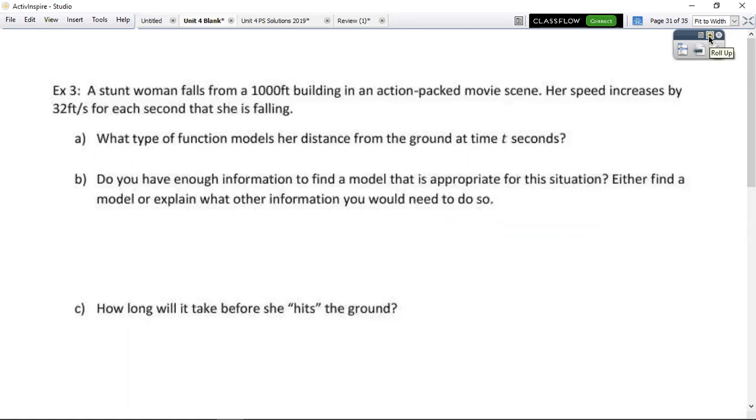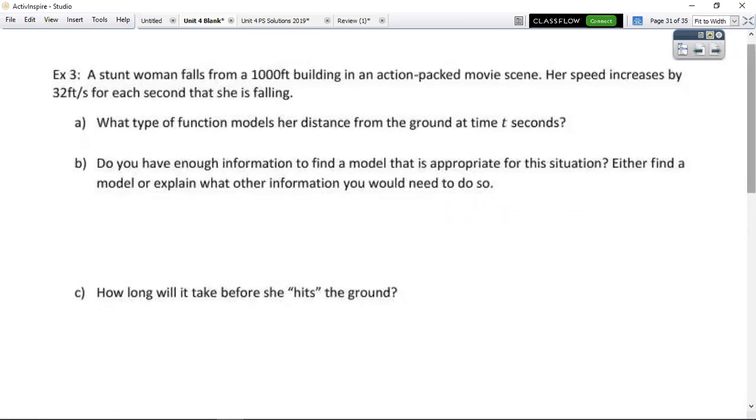So this says that a stunt woman falls from a 100-foot building in an action-packed movie scene. Her speed increases by 32 feet per second for each second that she is falling. So for each one, you're going to have to say that you keep adding on that 32. What type of model?